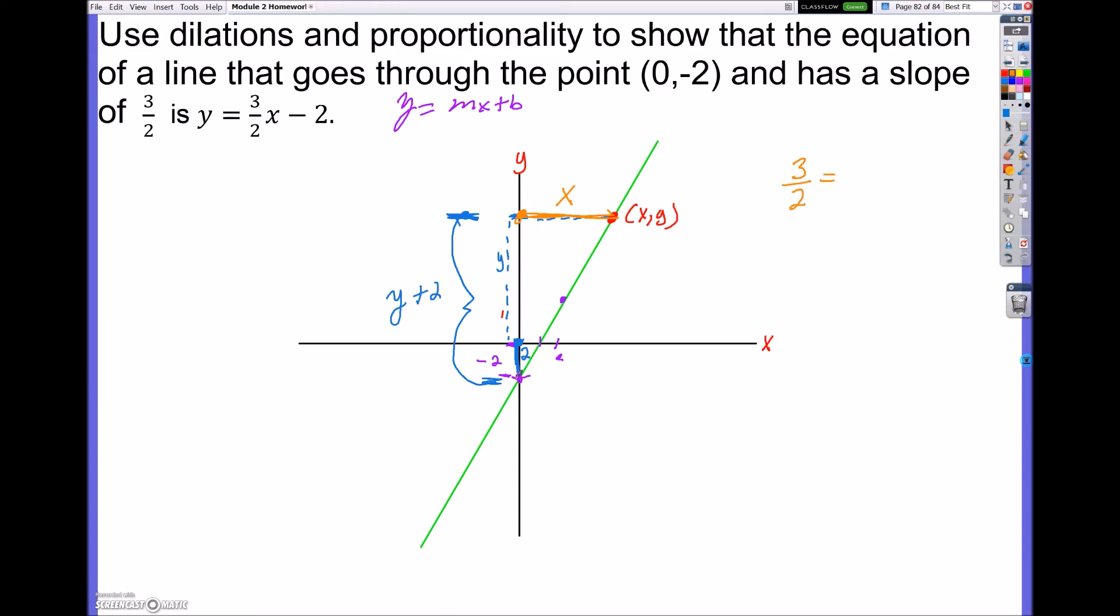Now, using these values, what was my rise from this point to the mystery point y? Well, I know it was y plus 2 all over my unknown x value, which was x. So now what I need to do is isolate y and get it by itself.